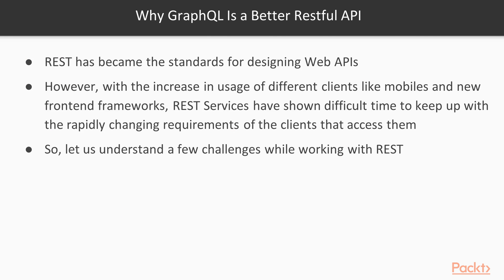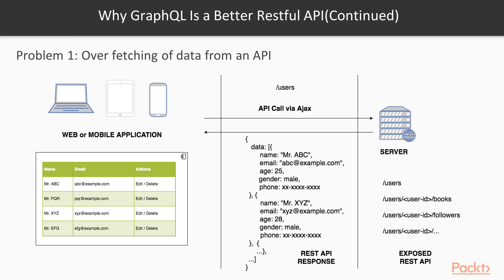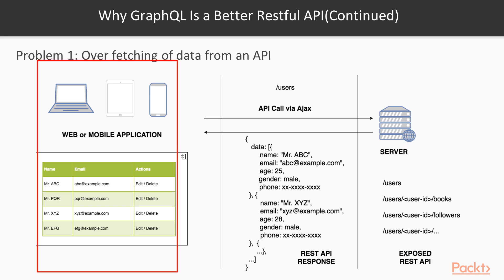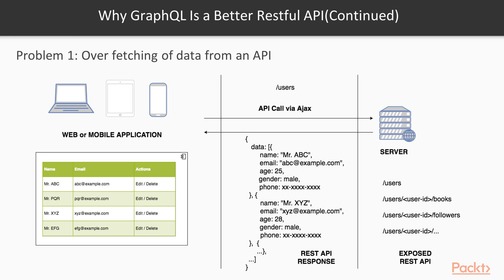Let's understand why GraphQL is better as a RESTful API. REST has become the standard for designing web APIs. However, with the increase in the usage of different clients like mobile and front-end frameworks, REST services have had a difficult time keeping up with the rapidly changing requirements of the clients that access them. It's a common pattern in REST where the server exposes different API endpoints consumed by the client for data. Most of this data has a fixed data structure.